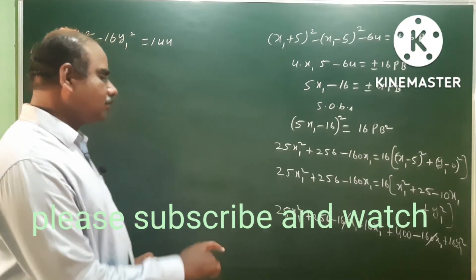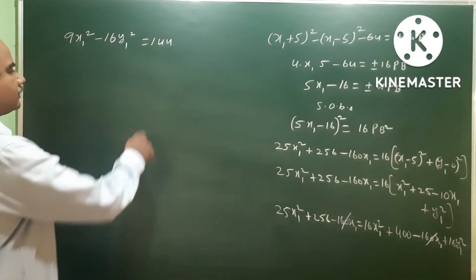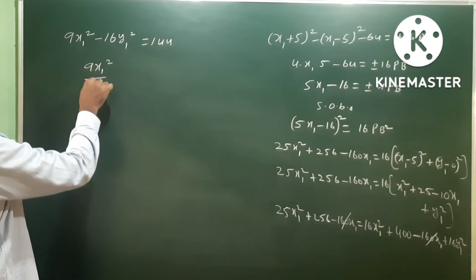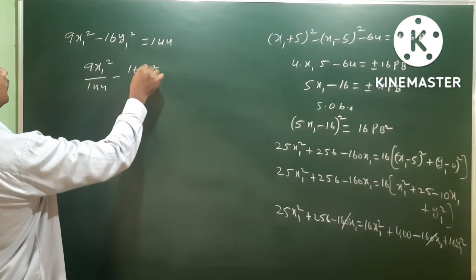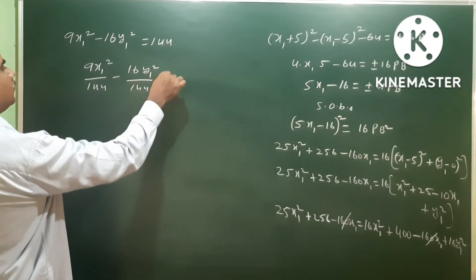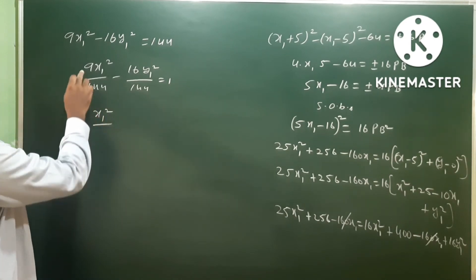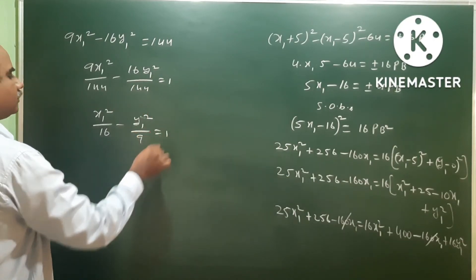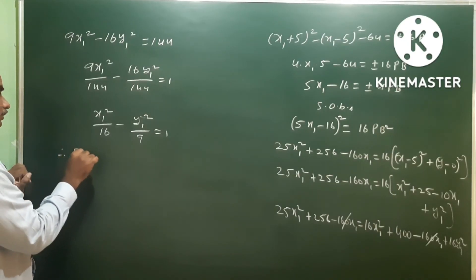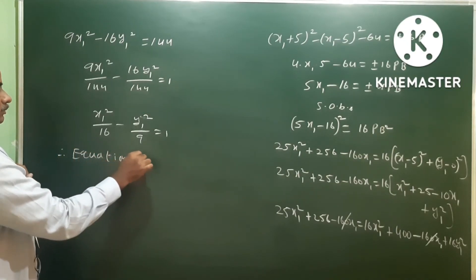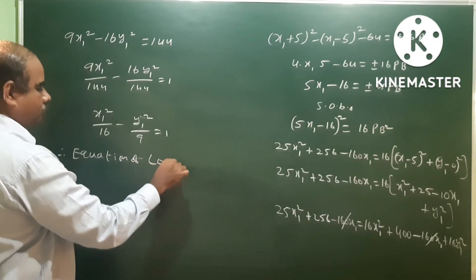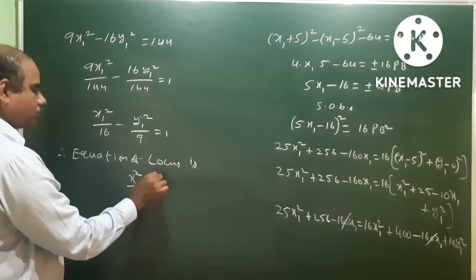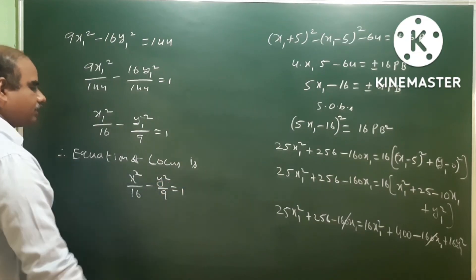So left side gives 9x₁² minus 16y₁², and on the right side: 400 minus 256 = 144. So the entire equation is 9x₁² minus 16y₁² = 144. Dividing both sides by 144: x₁²/16 minus y₁²/9 = 1. Therefore, the equation of the locus is x²/16 minus y²/9 = 1, which is a hyperbola.